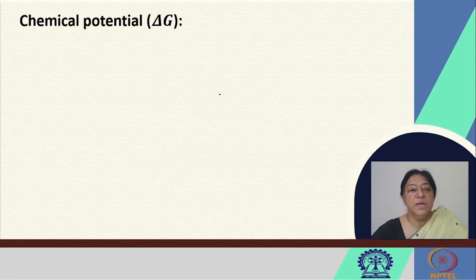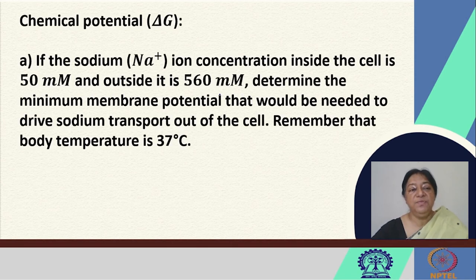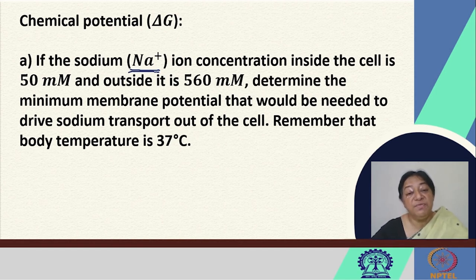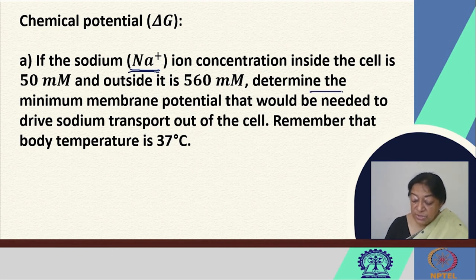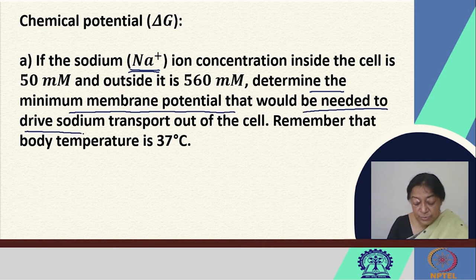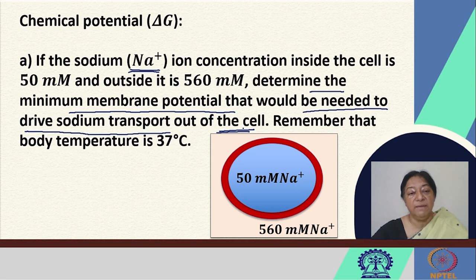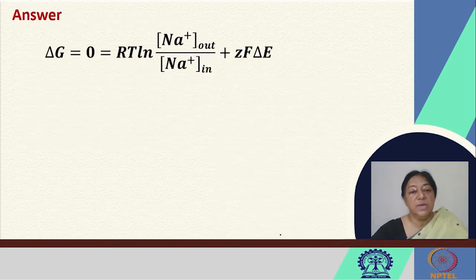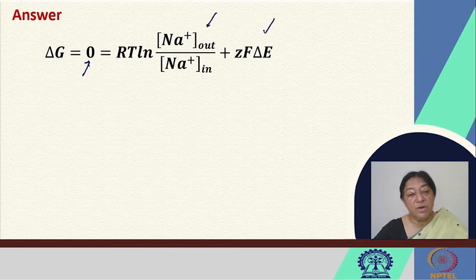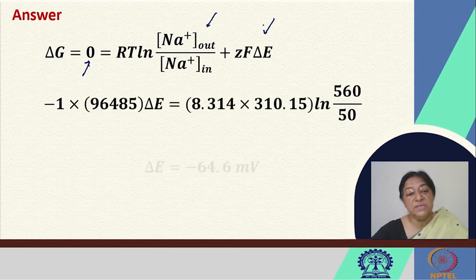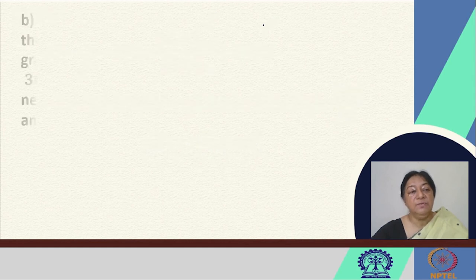In another situation: if the sodium ion concentration inside the cell is 50 mM and outside is 560 mM, we must determine the minimum membrane potential needed to drive sodium transport out of the cell at body temperature of 37°C. Setting delta G equal to zero for the equilibrium situation, with the chemical potential and electrochemical potential terms combined, we solve for the delta E value required.